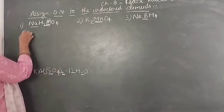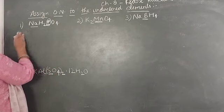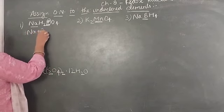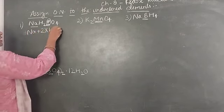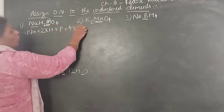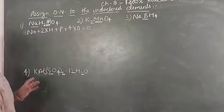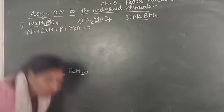And each element has an oxidation number, plus 1, so plus 1. Na plus 2 into H plus P plus 4 into O equals 0. The total oxidation number of any compound is 0.